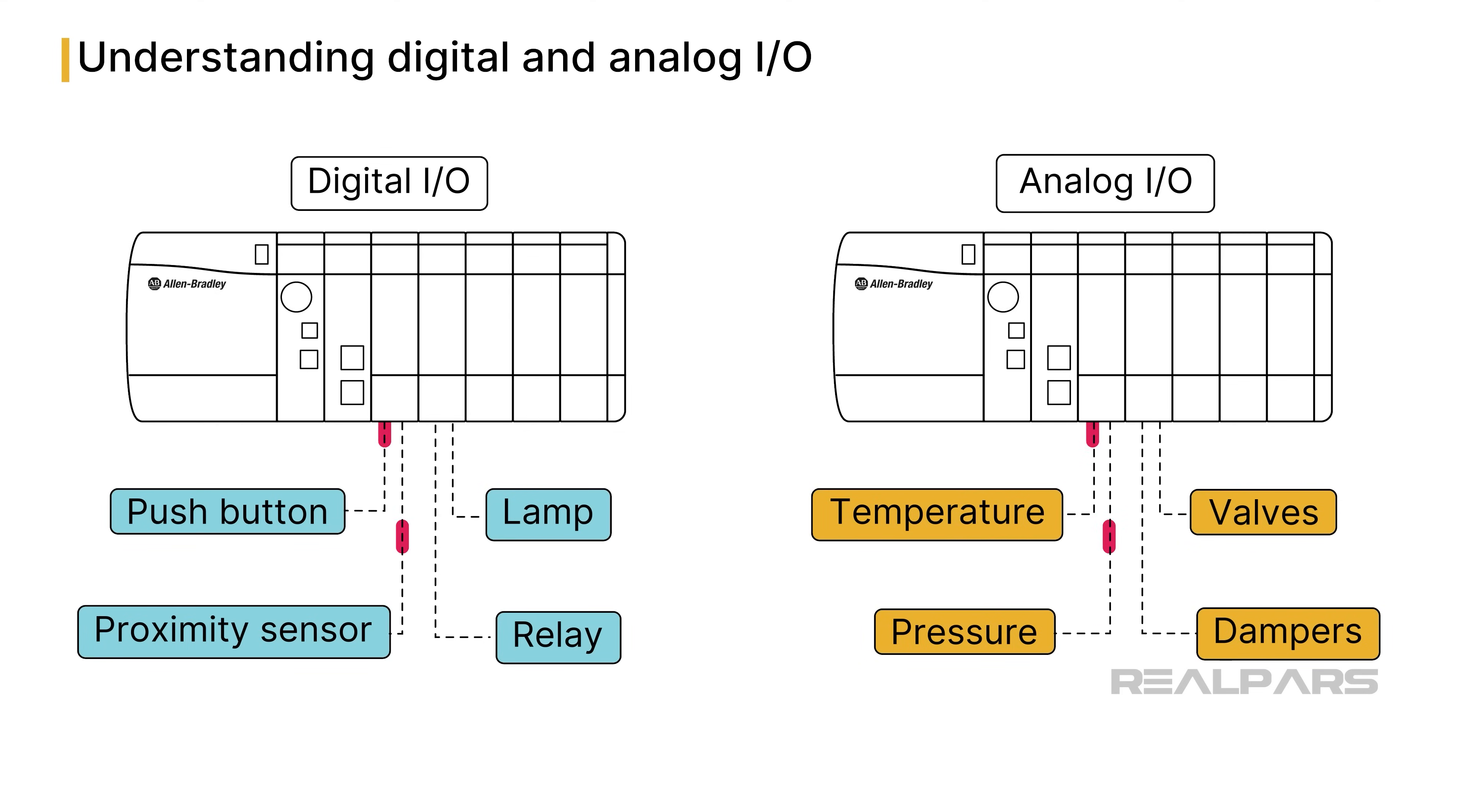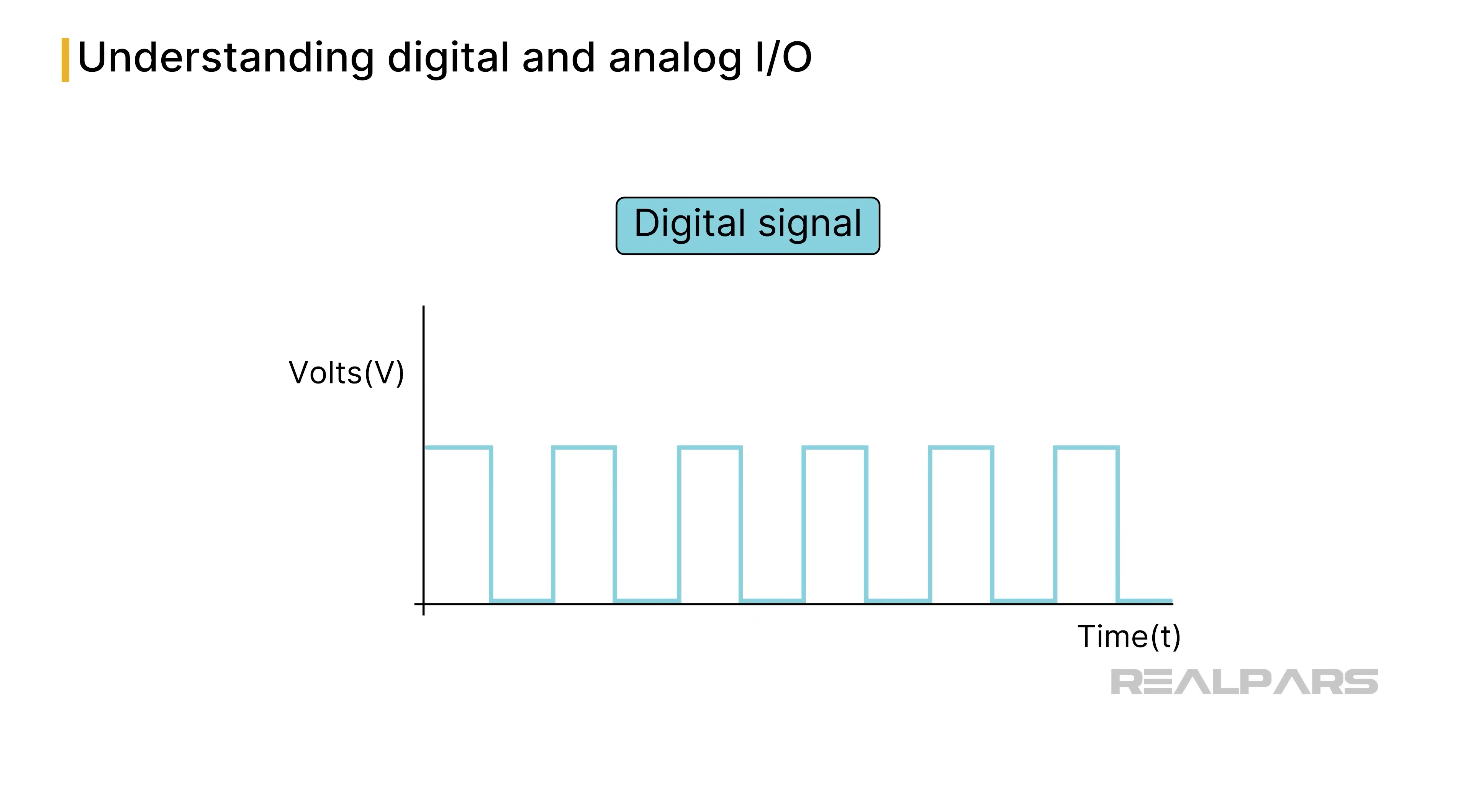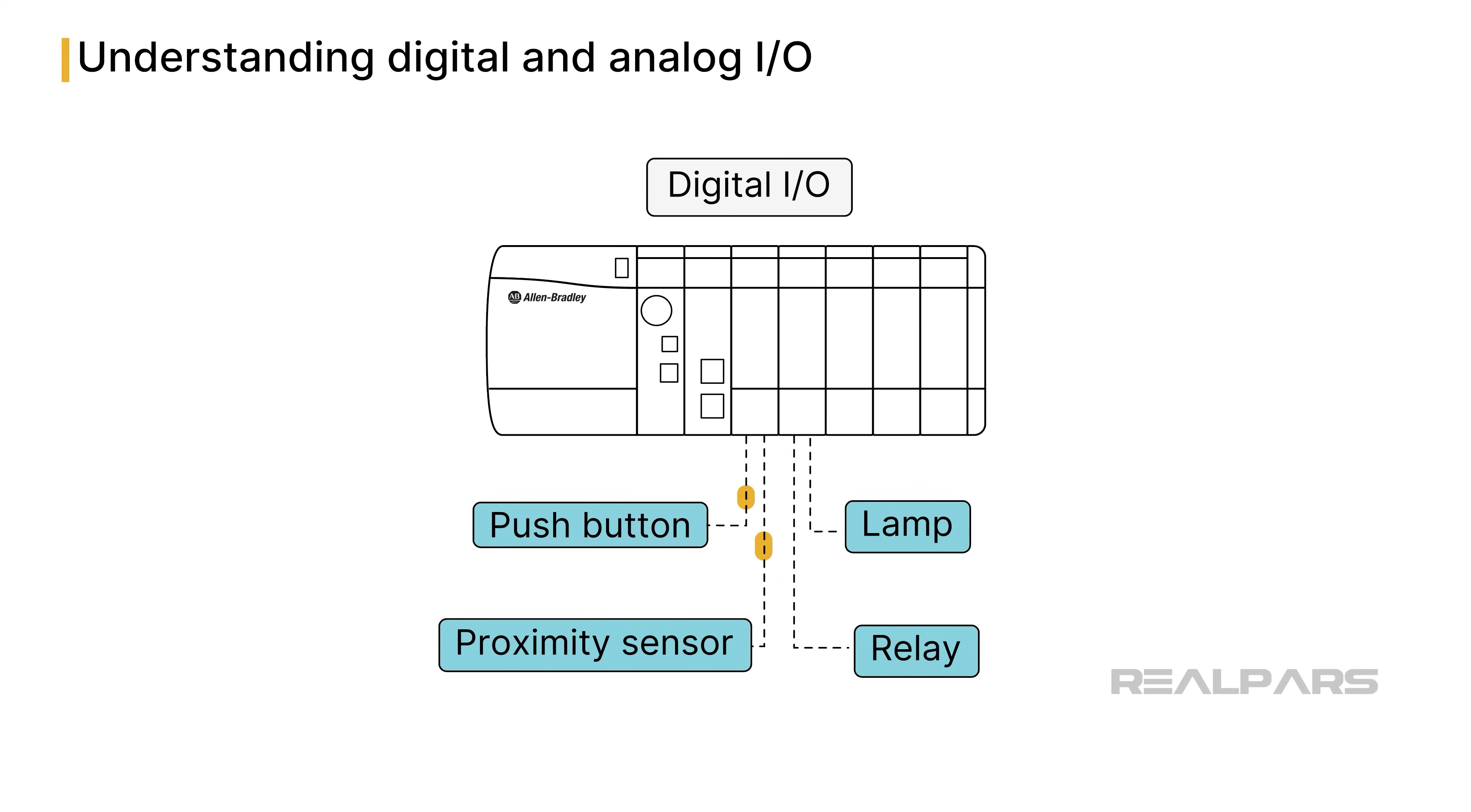Before we proceed, let's discuss the differences between digital and analog I/O and their expected electrical characteristics. A digital signal has only two conditions, voltage on or off. The voltage state at a digital PLC input can represent the condition of a physical device, such as a proximity sensor or a push button.